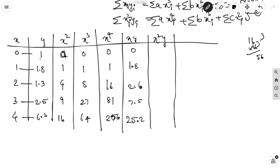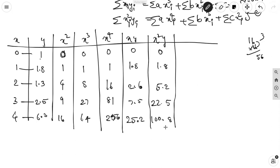Next, x²y values: 0×1 = 0, 1×1.8 = 1.8, 4×1.3 = 5.2, 9×2.5 = 22.5, 16×6.3 = 100.8. Now find the summation of these values.